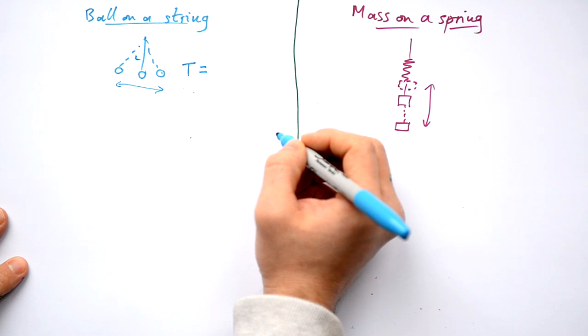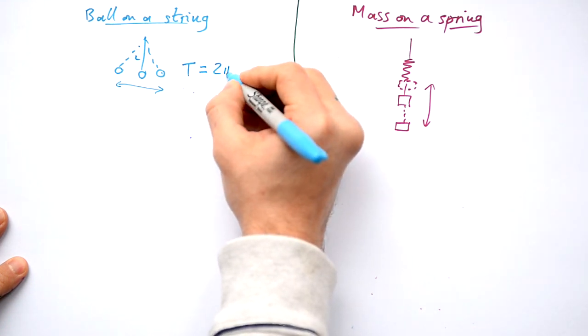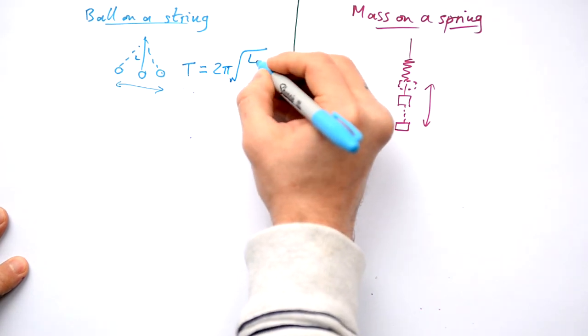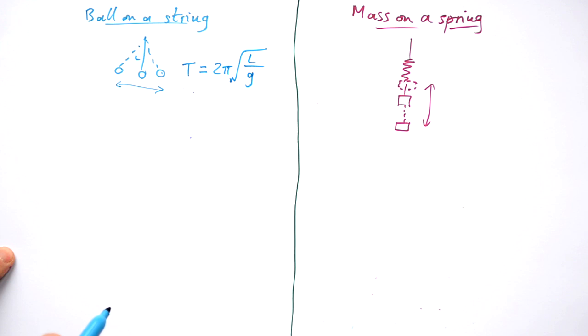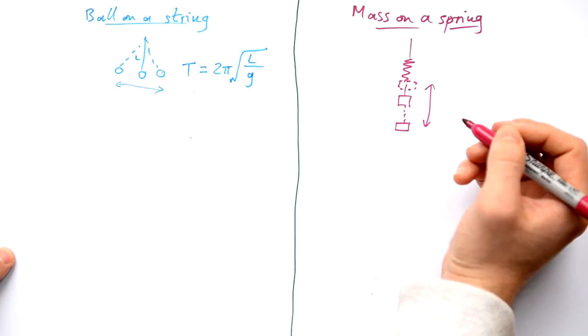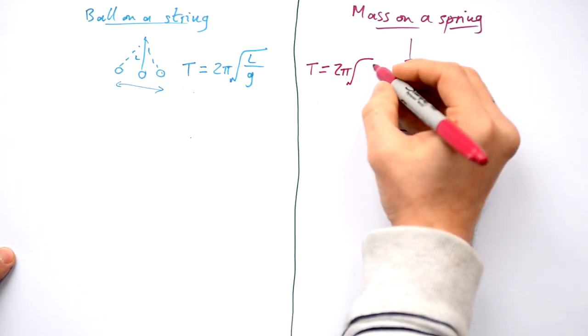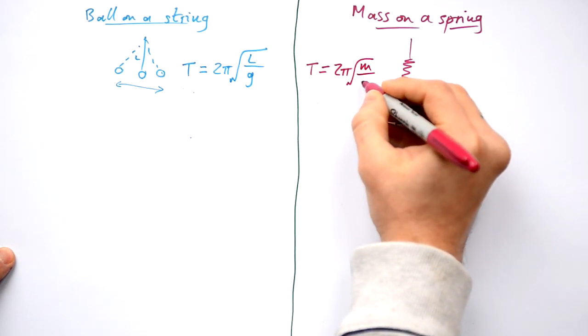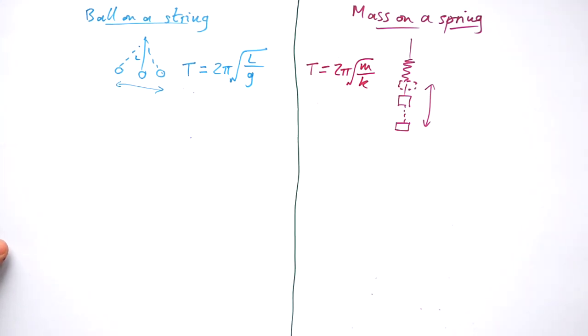The time period for a ball on a string, that's a pendulum, is equals to 2π times the square root of L, that's the length of the string, over g. That's the gravitational field strength or the acceleration due to gravity, depending on what you want to call it. For a mass on a spring, it's similar because it starts with 2π times the square root of mass on the spring divided by the spring constant itself. So very similar equations, but quite different as well.